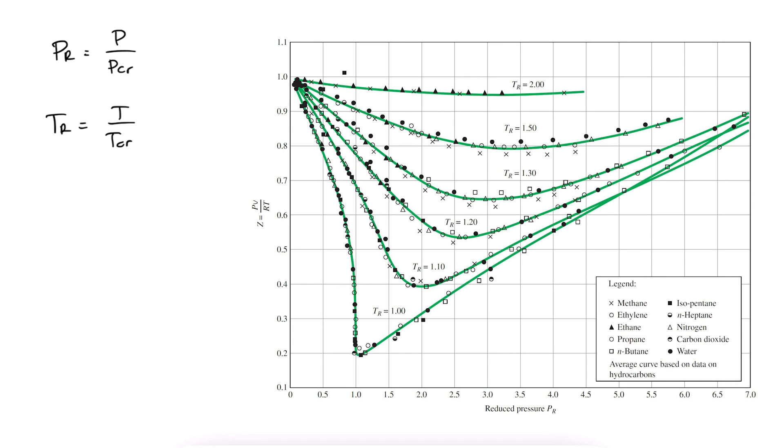To find the compressibility factor, you first calculate the reduced pressure and reduced temperature, and you go into the compressibility chart. Your x-axis will be the reduced pressure values, and the different curves will be the different reduced temperature values. A quick example here, if you have found a reduced pressure of 2, and a reduced temperature of 1.3, you'd have a compressibility factor Z equal to 0.7.